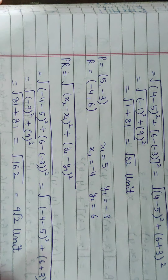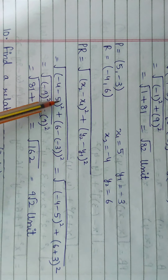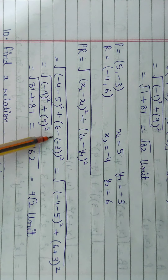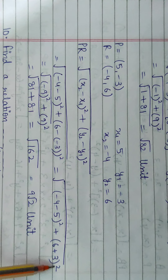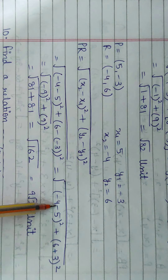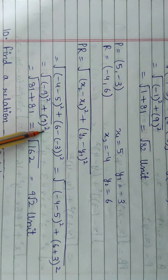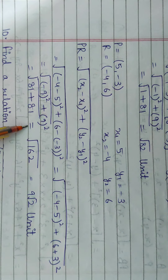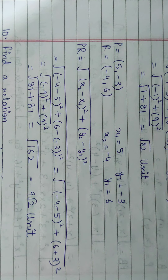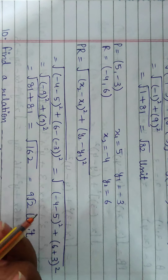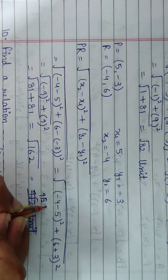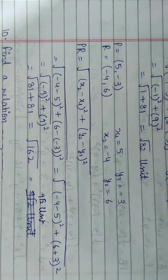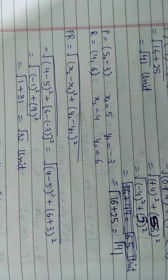For PR when x = -4: R is (-4, 6). So (-4 - 5)² + (6 - (-3))² = (-9)² + (9)² = 81 + 81 = 162. Therefore PR = √162 = 9√2.